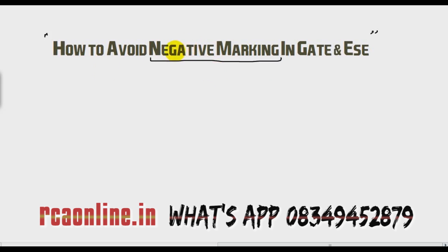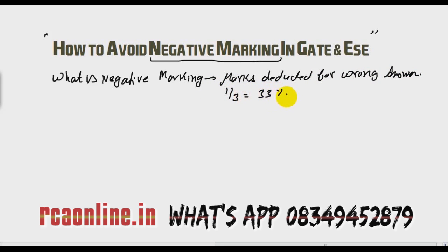What is negative marking? Marks deducted for wrong answer. The percentage is one-third, which means 33 percent marks will be deducted for a wrong answer. So if you make a one mark wrong answer, your marks deducted will be 0.33.